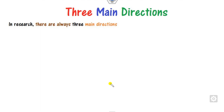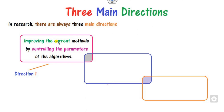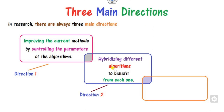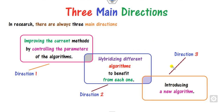What are the three main research directions for your research problems? First, you can improve an already existing method — for example, if there is a PSO method, you can improve it by changing its control parameters. Second, you can hybridize two algorithms, like hybridizing PSO with GA, or GA with ant colony and so on. Third, you can introduce new algorithms related to these optimization techniques.